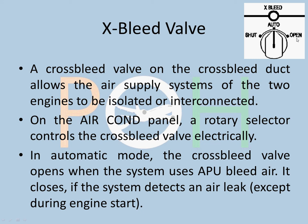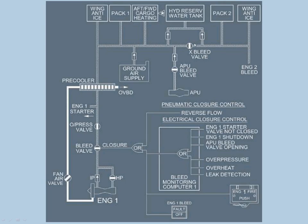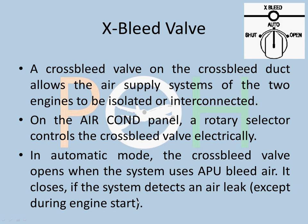A rotary selector controls the cross bleed valve electrically. It has three positions: SHUT, AUTO, and OPEN. SHUT closes the valve; OPEN opens it. In AUTO, the cross bleed valve will open when the system is using APU bleed, so that APU bleed is available on both sides. However, if an air leak is detected on either side, it will go to SHUT to isolate the engine one and engine two systems — for example, if engine one side is leaking, the valve shuts so engine two bleed does not leak through that side. This isolation does not apply during engine start.